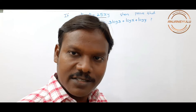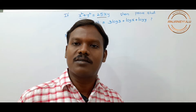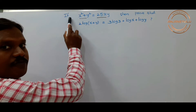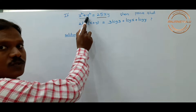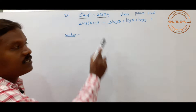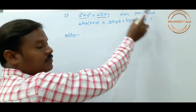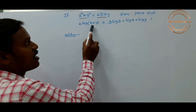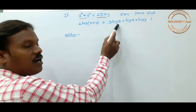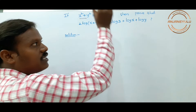Good morning friends. Now we discuss a logarithm problem. Let us see the problem. If x squared plus y squared equals 25xy, then prove that 2 log(x + y) is equal to 3 log 3 plus log x plus log y.